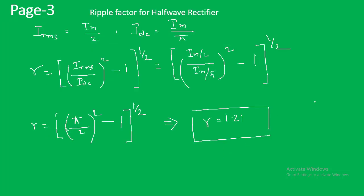Now let us find the ripple factor for the half wave rectifier, for which we need I_RMS and I_DC. These were already derived in the lecture on half wave rectifier efficiency. We found that I_RMS = I_M / 2 and I_DC = I_M / π for the half wave rectifier. Substituting these into equation 3, the I_M terms cancel and we are left with γ = √[(π/2)² − 1], which simplifies to a ripple factor of 1.21.